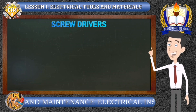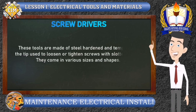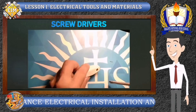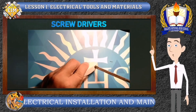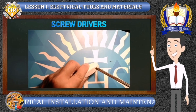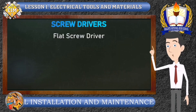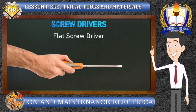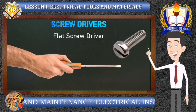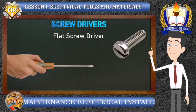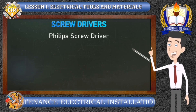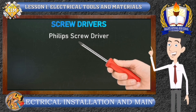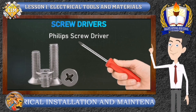Number 1: Screwdrivers. These tools are made of steel, hardened and tempered at the tip, used to loosen or tighten screws with slotted heads. They come in various sizes and shapes. We have the flat screwdriver, whose blade tip is wedge-shaped and resembles a negative sign — used to drive screws with a single slot head. Next is the Phillips screwdriver, which has a cross tip resembling a positive sign, used to drive screws with cross-slotted heads.